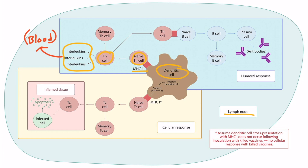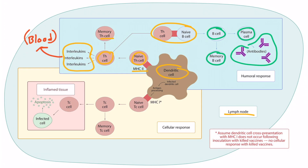The second thing T helper cells do is form a memory helper cell. The third thing is that they can activate B cells. The activated B cell then forms a memory B cell and then a plasma cell, and it's the plasma cell that releases antibodies.